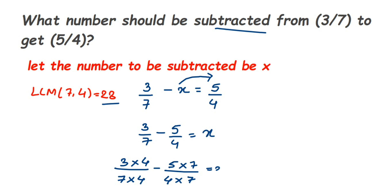This is equal to x. When you multiply, 3 times 4 is 12, so we'll get here 12/28. Multiply 5 and 7: 5 times 7 is 35, so minus 35/28 is equal to x.